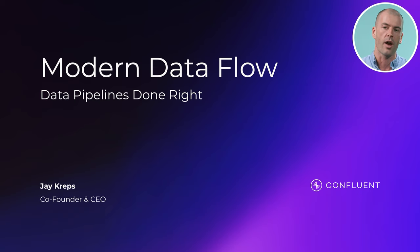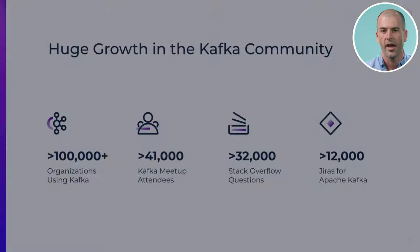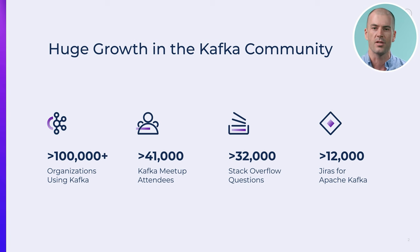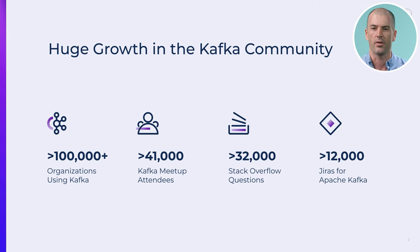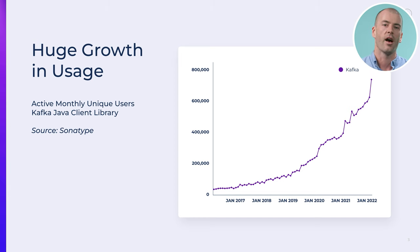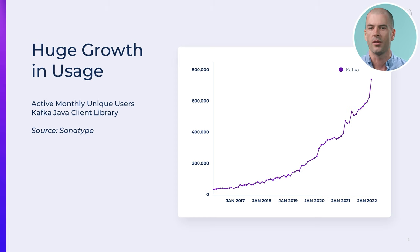If you're interested in real-time analytics, the first problem you have to solve is how do you get the data there at the right time to be able to visualize it, analyze it, and use it. This is part of a broader trend around how data is used in organizations and this broader move to streaming. You can see one illustration of that in the growth of Kafka usage — hundreds of thousands of organizations using Kafka, tens of thousands of people attending meetups. The ecosystem has just grown and grown, and if you look at the usage of Kafka, this is the people actively integrating with the Java library — hundreds of thousands of people now using this, and it's increasingly part of the production stack in virtually every company.